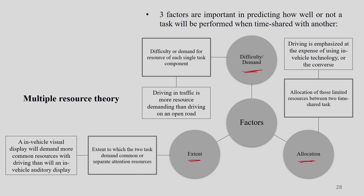When talking about extent, it refers to the extent to which two work tasks demand common or separate attention resources. For example, in any vehicle, a visual display will demand more common resources with driving than an in-vehicle auditory display — in-vehicle visual displays are more demanding. For allocation, it refers to the allocation of limited resources between two time-shared tasks — for example, driving being emphasized at the expense of using in-vehicle technology, or the converse.